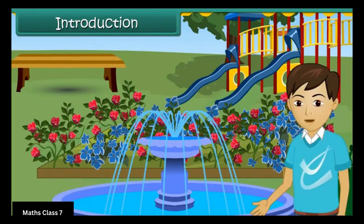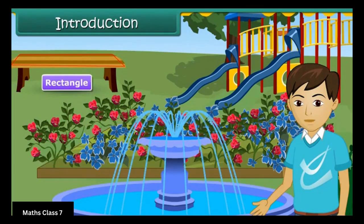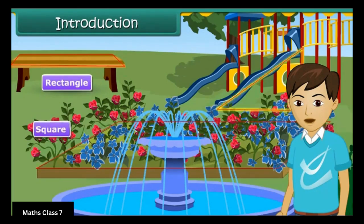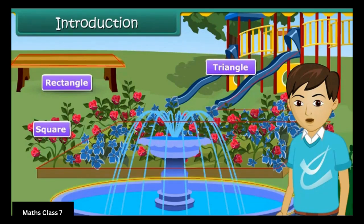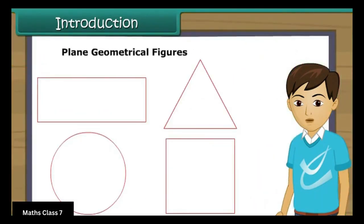Children, now analyze the shapes of different objects in this picture. The shape of the bench is a rectangle. The shape of the flower bed is a square. The slider's shape is a triangle. The shape of the fountain pond is a circle. These are called the plane geometrical figures. In this lesson, we will learn the properties of different geometrical figures.